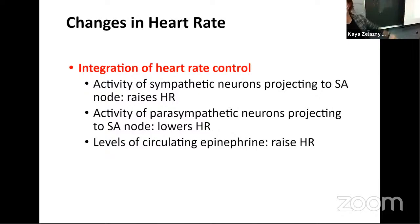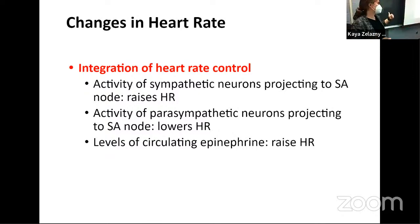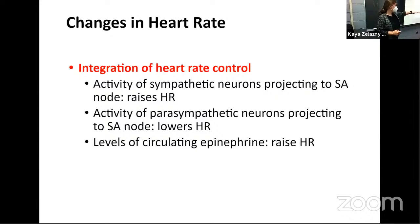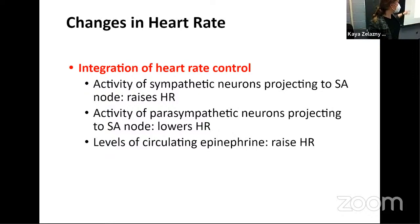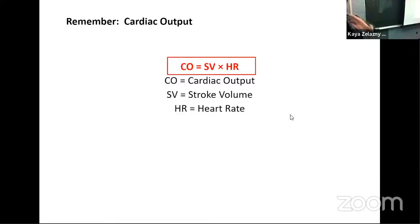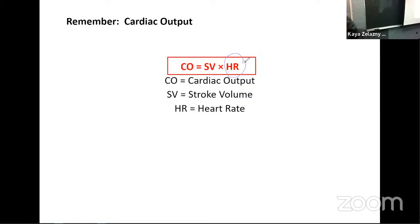Integrating our changes in heart rate really just means thinking about all the different factors that could affect the heart rate at once. We want to think about how much sympathetic activity there is — that would tend to increase the heart rate. We also want to think about how much parasympathetic activity there is — that would tend to lower the heart rate. And then circulating levels of hormones, mainly epinephrine, would raise the heart rate as well. That's kind of what your body is adding together to figure out where to set the heart rate. Now we're going to think about the stroke volume part.